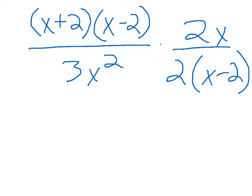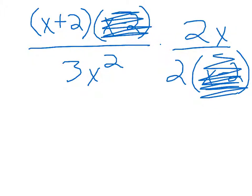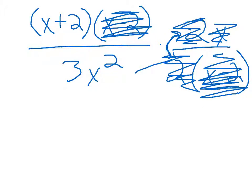There's the x minus 2 here, x minus 2 here. And these can cancel out 2's. And then here we have an x to get rid of the square there.